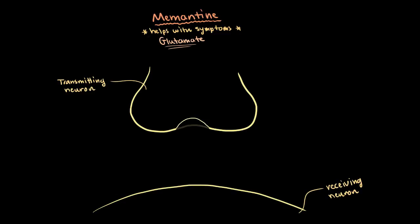Instead of acetylcholine though, now we focus on this neurotransmitter called glutamate. Glutamate, when at normal levels, actually helps our learning and memory, and is considered an excitatory neurotransmitter.